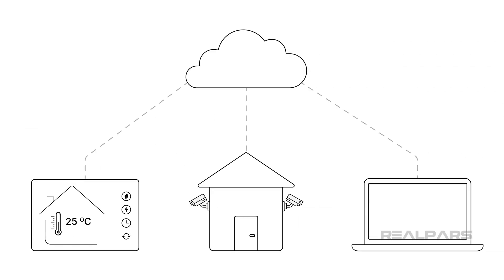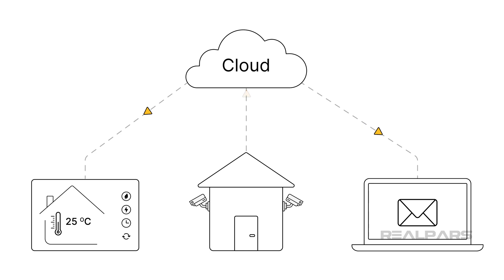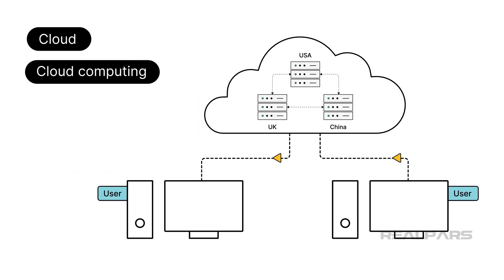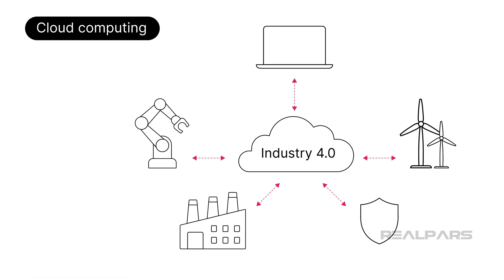Whether you know it or not, most of us take advantage of the cloud at least once per day. You probably use the cloud to send and receive email messages. If you have a smart thermostat, you use the cloud to set and check the temperature in your home. You may have ever-watchful surveillance cameras mounted above your home's front door. Those are just three examples — there are dozens more. In this video, we will discuss the cloud and explain cloud computing. We will also illustrate the importance of cloud computing in Industry 4.0 and its benefits for industrial processes, and introduce you to cloud models and some key players in cloud services.